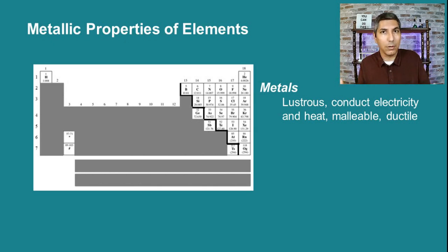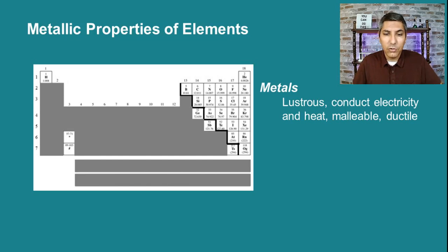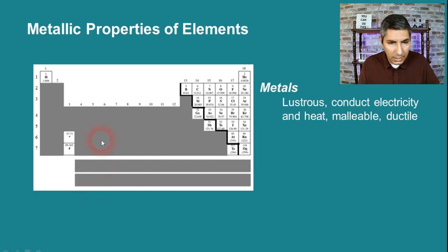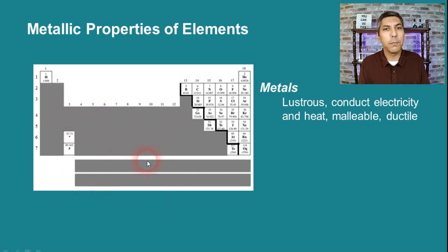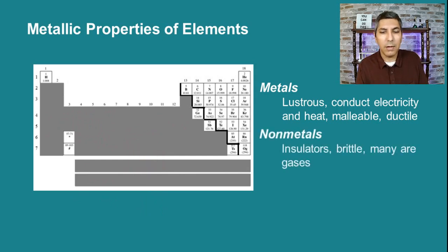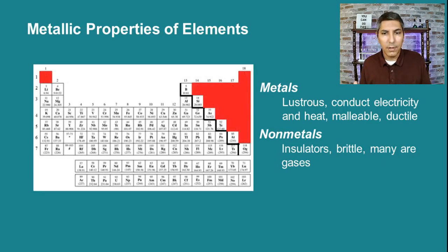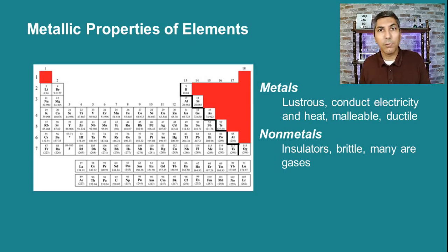Notice that metals are generally found on the left side of the periodic table — the elements shaded out there are the metals, the vast majority of elements on the periodic table. The non-metals are found on the right side of the table and are just the opposite: they're not conductors, they're insulators. They're brittle — if you hit them with a hammer in their solid form they're probably going to break or shatter. A lot of these non-metals are gases.